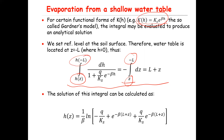The integral of dz is simply Z, and plugging in the limits gives L plus Z. The other integral has an analytical solution found in tables of integrals. Plugging in the limits and performing the algebra, you end up with an expression for Hc—the matric potential at any given depth below the surface.